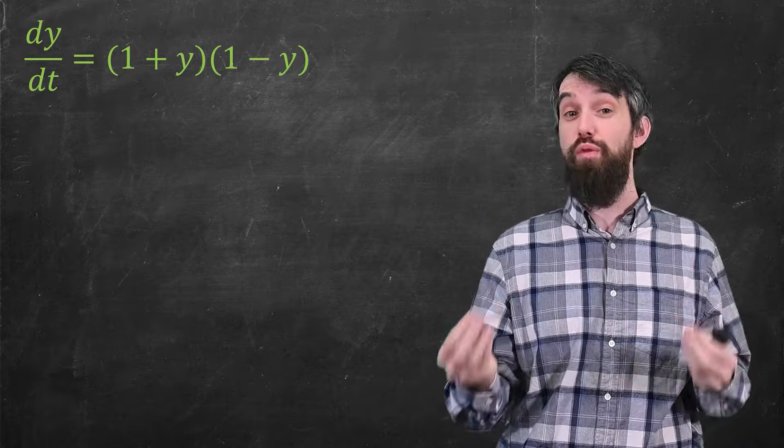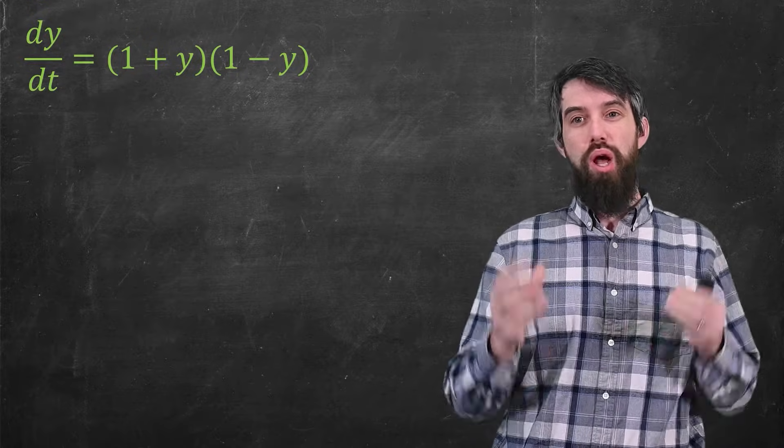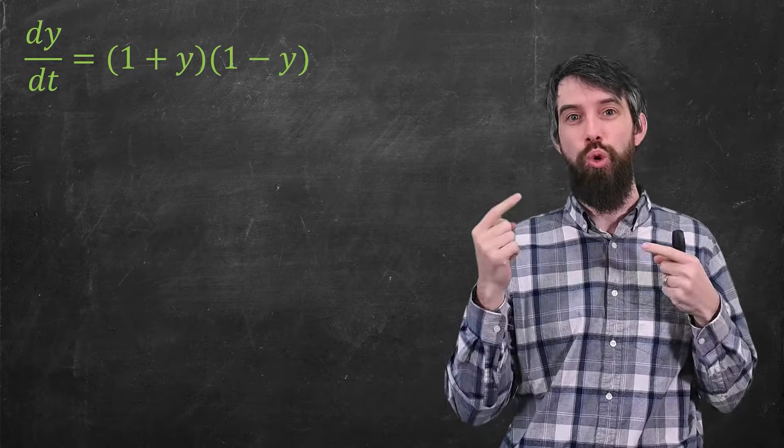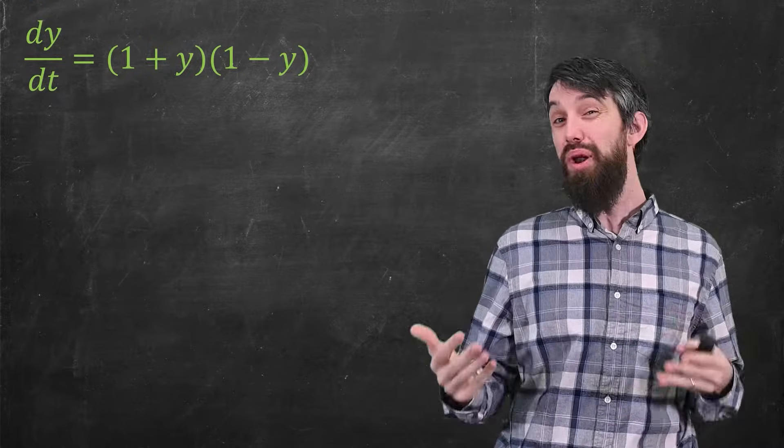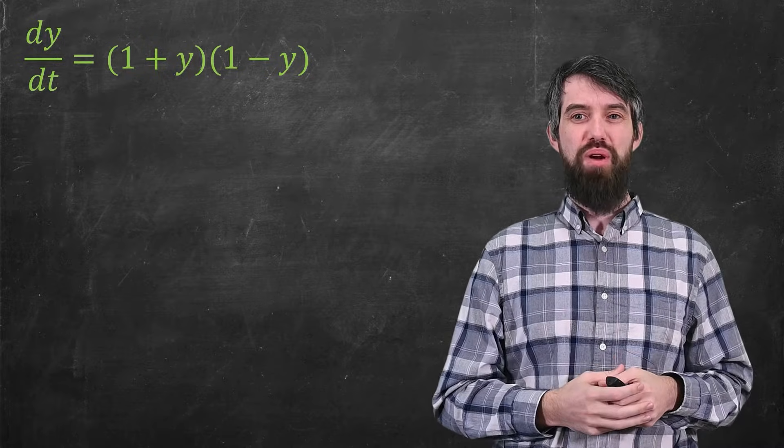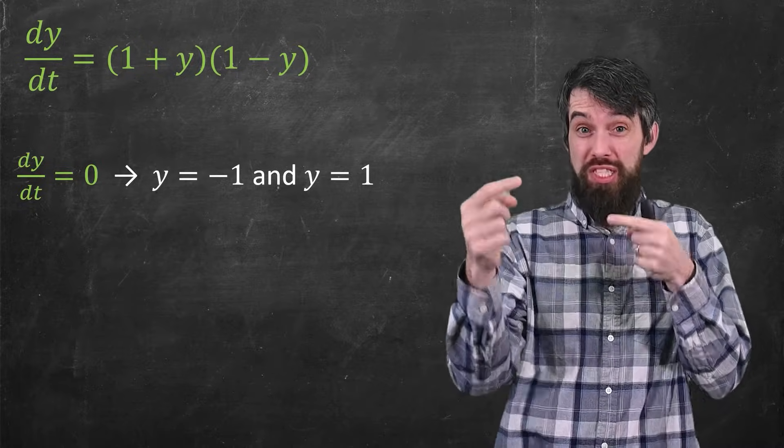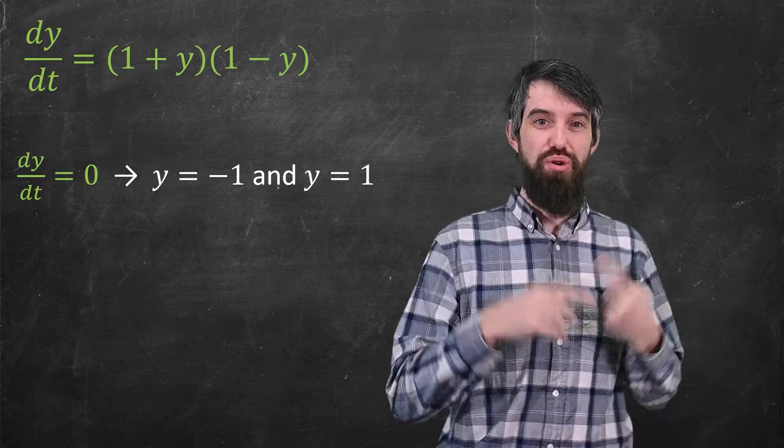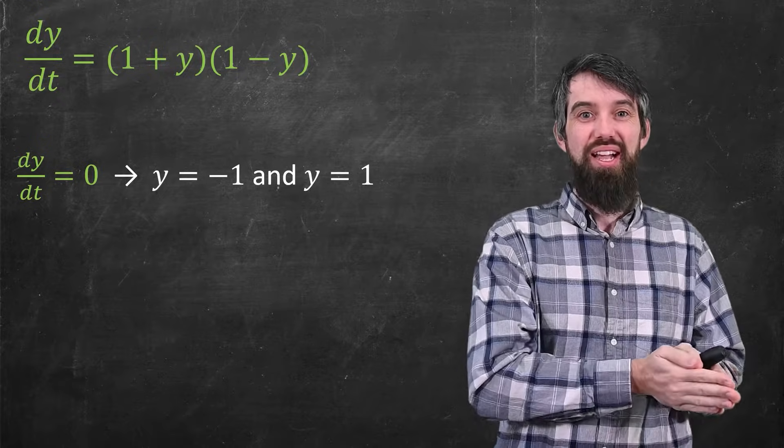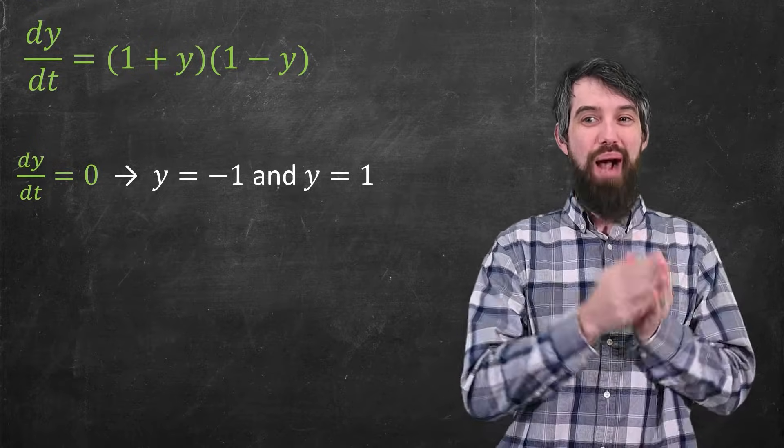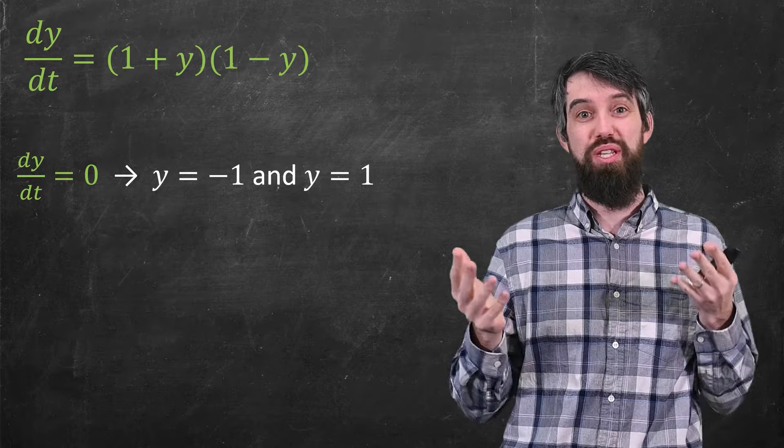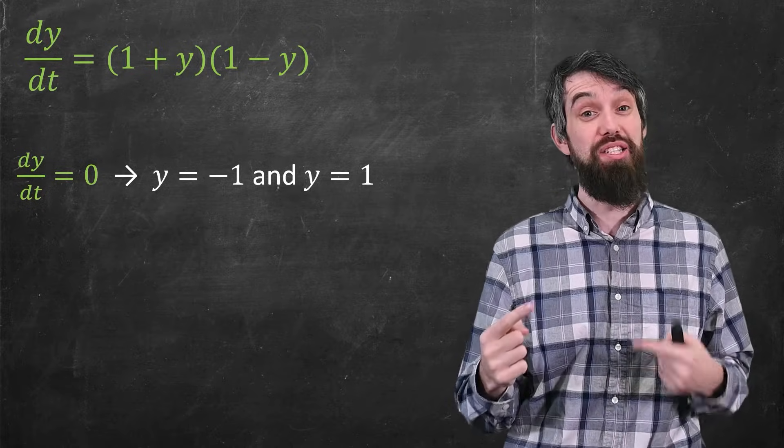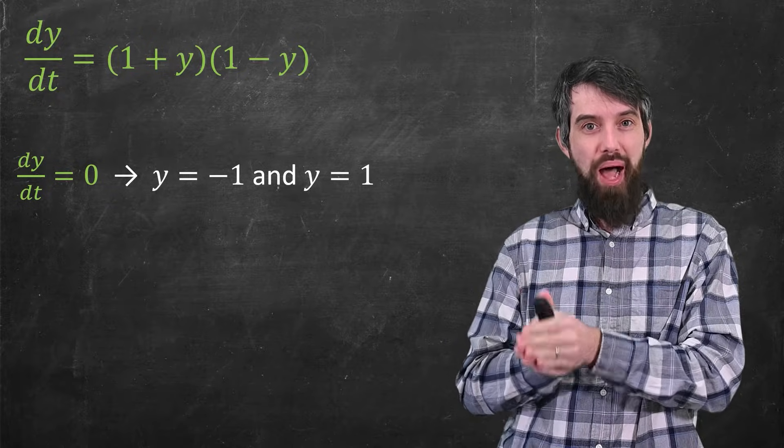So here's an example. This is the derivative of y with respect to t is equal to (1 + y)(1 - y). That right-hand side only has y's in it. And one thing I want to note right off the bat is that if you were trying to figure out when is the derivative equal to 0, then you'd get that y is equal to -1 and y is equal to 1. If you knew this was your derivative and you were in math 100, you'd say its critical points were at -1 and 1, where the derivative was equal to 0. So now we're going to turn to the computer to help us graph it, and I want you to keep these two spots y equal to -1 and y equal to 1 in mind.